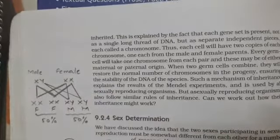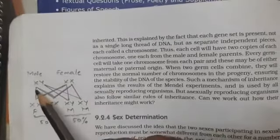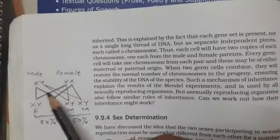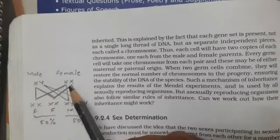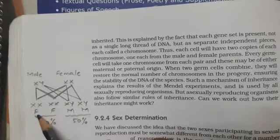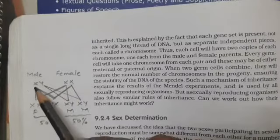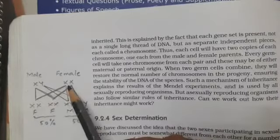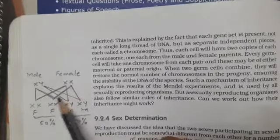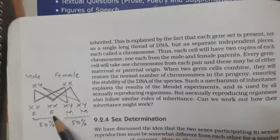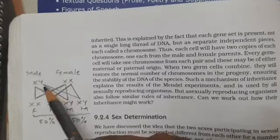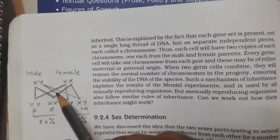Now what are the chances that determine the sex? From the male side, if an X chromosome is donated, and the female also donates an X chromosome — because she has only X chromosomes — the upcoming child will have both X chromosomes and will be a female child. Similarly, if X from male and X from female combine, that X and X again makes a female child.